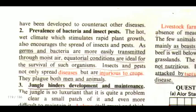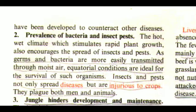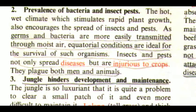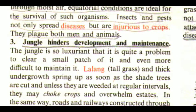The second factor is the prevalence of bacteria and insect pests. The hot wet climate, which stimulates rapid plant growth, also encourages the spread of insects and pests, as germs and bacteria are more easily transmitted through moist air. Equatorial conditions are ideal for the survival of such organisms. Insects and pests not only spread diseases but are injurious to crops; they plague both men and animals.